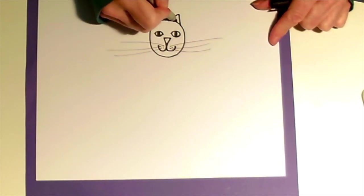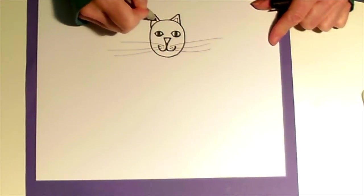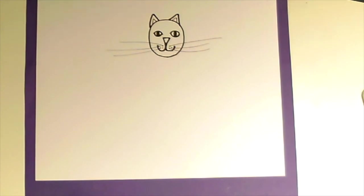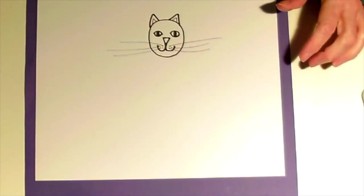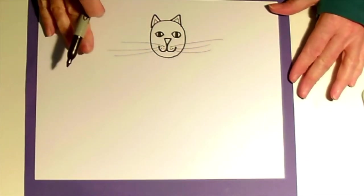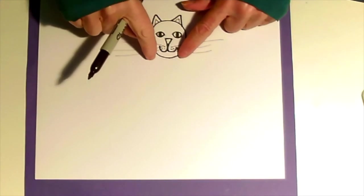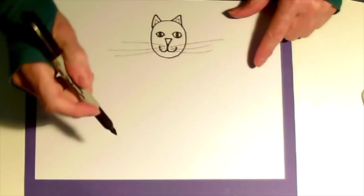And you can draw another smaller triangle on the inside of the bigger triangle. Okay, we got the cat's face. For the body, on either side of the bottom of that circle do a curved line on one side, go over and a curved line on the other side. That's going to be the cat's body.